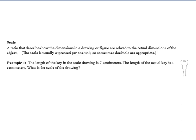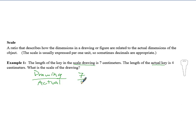Here's an example. The length of a key in a scale drawing is 7 centimeters — that's in the drawing. And the actual length of the key is 4 centimeters. They want to know what is the scale of the drawing. Essentially, we're comparing the drawing to the actual key, so we say it's 7 over 4. We can just leave it as this — this is known as the scale, or sometimes referred to as the scale factor.